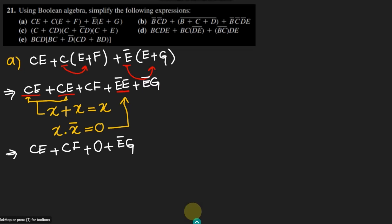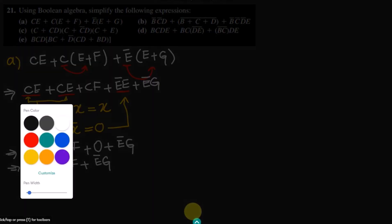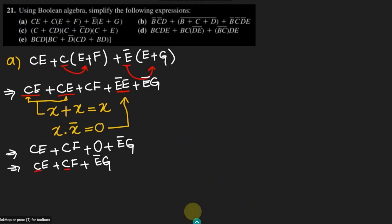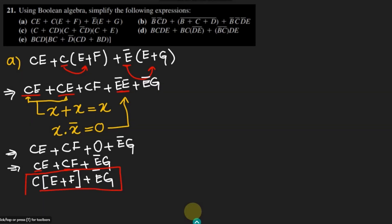After simplification we get CE plus CF plus E prime G. Taking C common, we can see that C is common in the first two terms. So taking it common, we get C times (E plus F) plus E prime G. This is the simplified version and it cannot be simplified further. This is the answer of part A of our question.